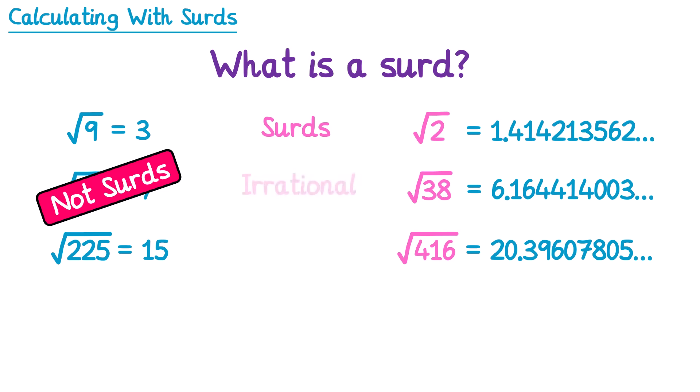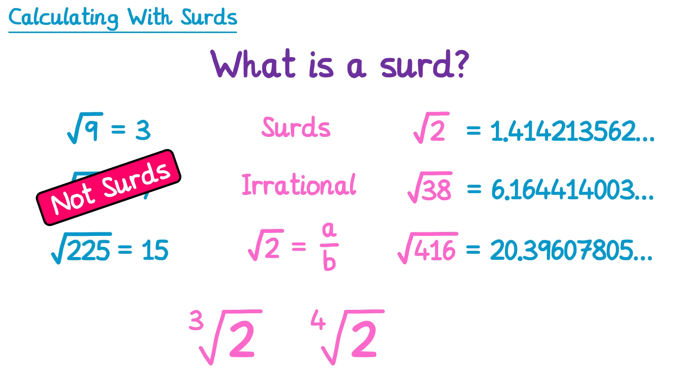A surd is an example of an irrational number. This means we cannot express them as a fraction — so if you try to write the square root of 2 as A over B where A and B are integers, you'll never do it because it's impossible. You can also have surds which are cube roots or even fourth roots, but for the purposes of the GCSE course it's just going to be square roots, so you can think of surds as just the square roots of numbers that are not square numbers.